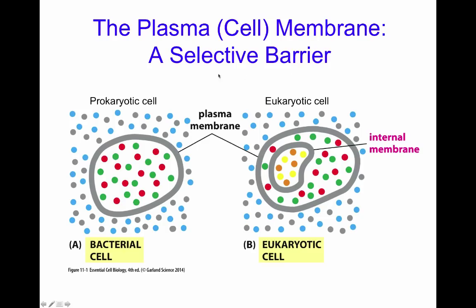The membrane, or plasma membrane — the cell membrane — is a selective barrier. On the left we have a prokaryotic cell, and on the right an eukaryotic cell. In the prokaryotic cell, the plasma membrane separates the environment inside the cell from the outside. Molecules are not free to pass between the two environments; they must be either selectively transported or channeled through.